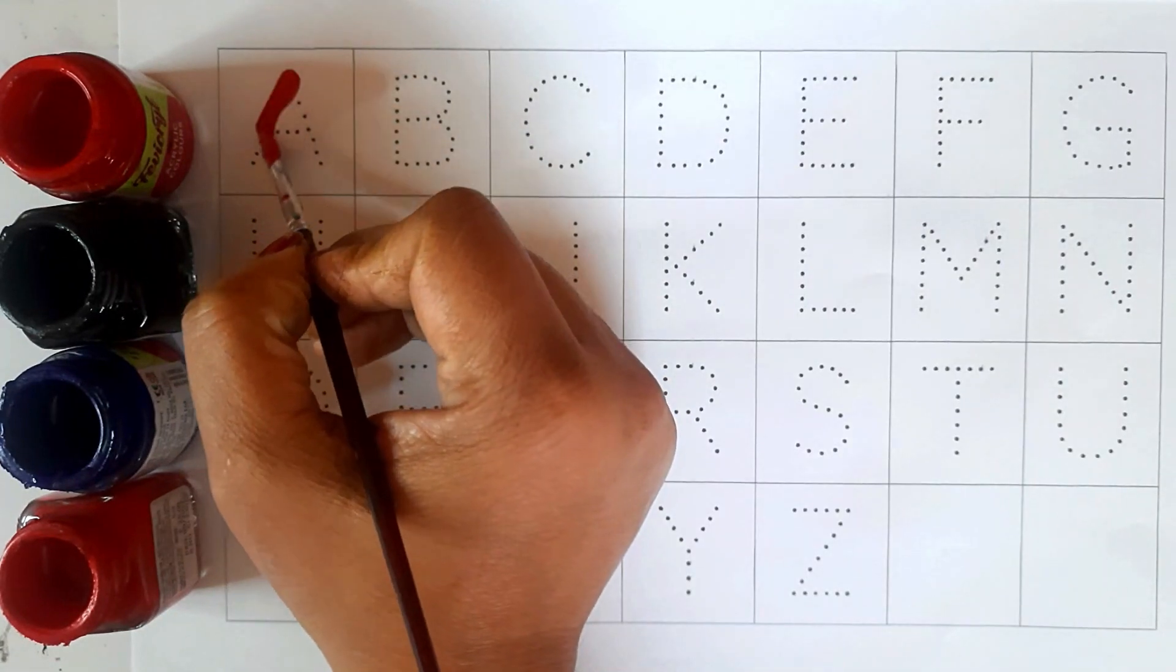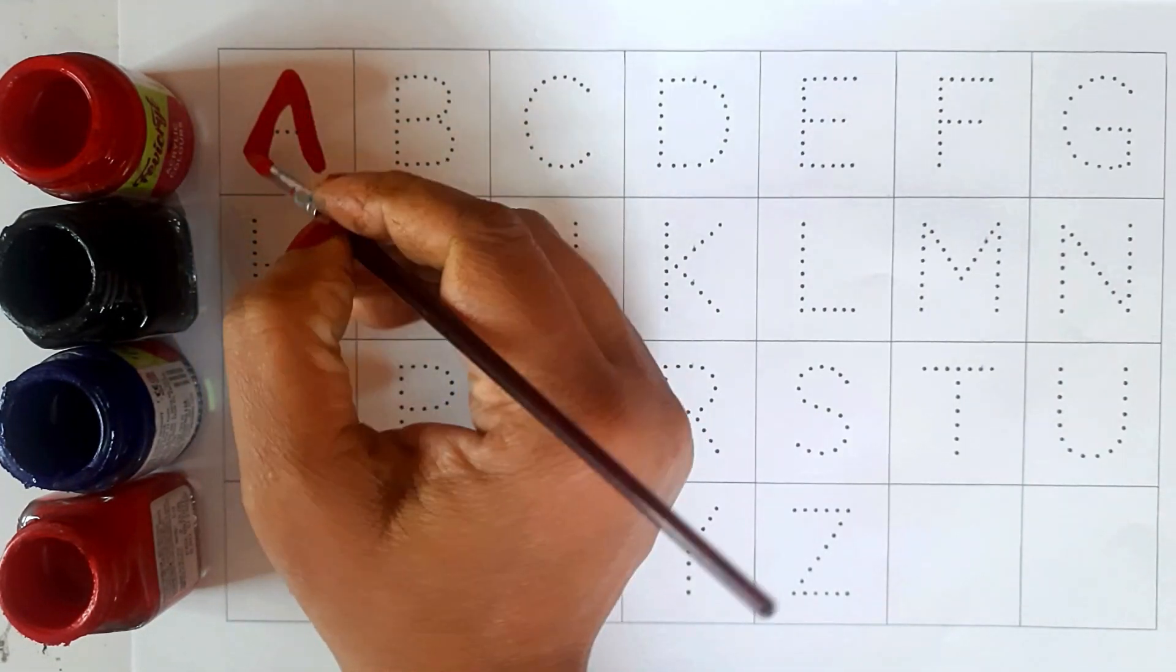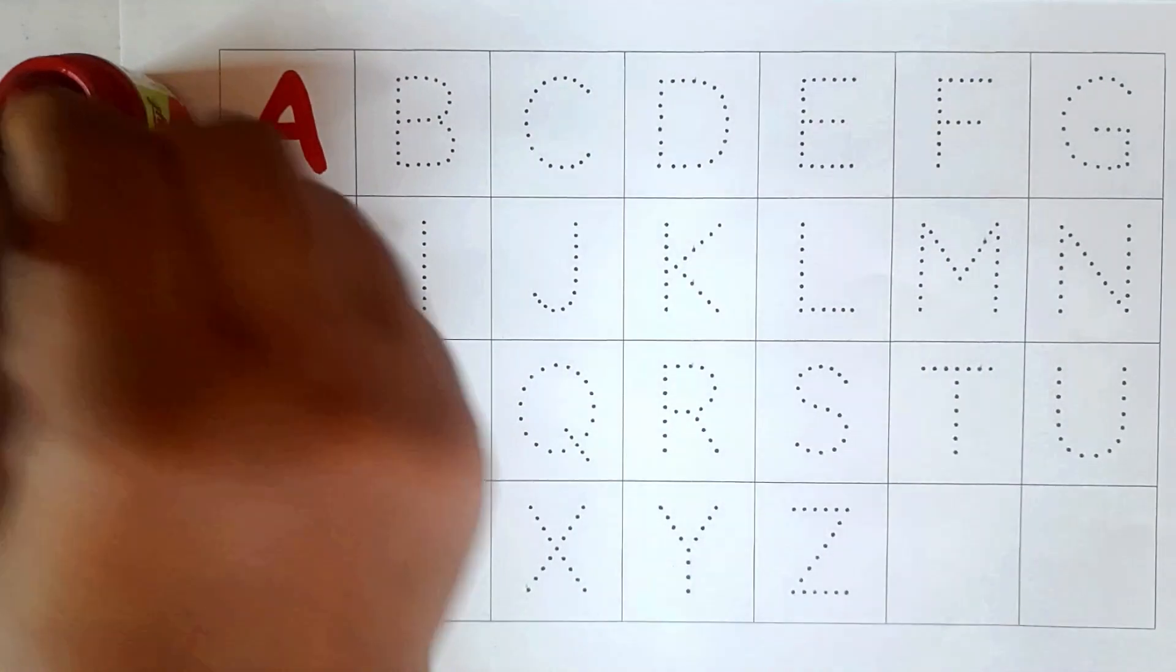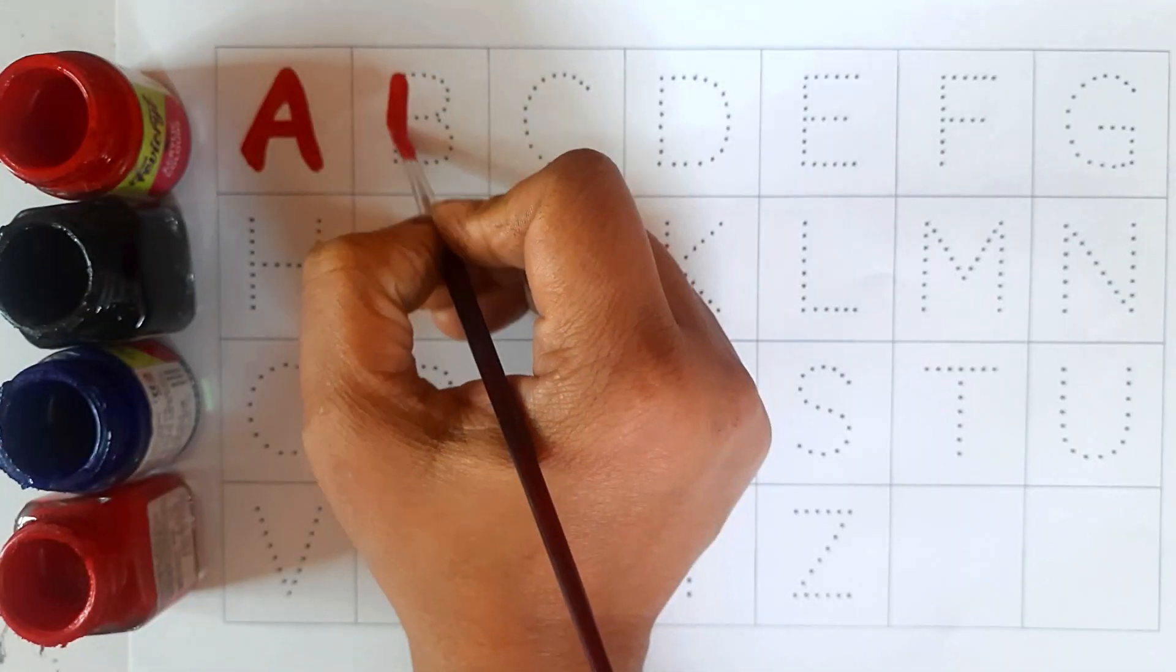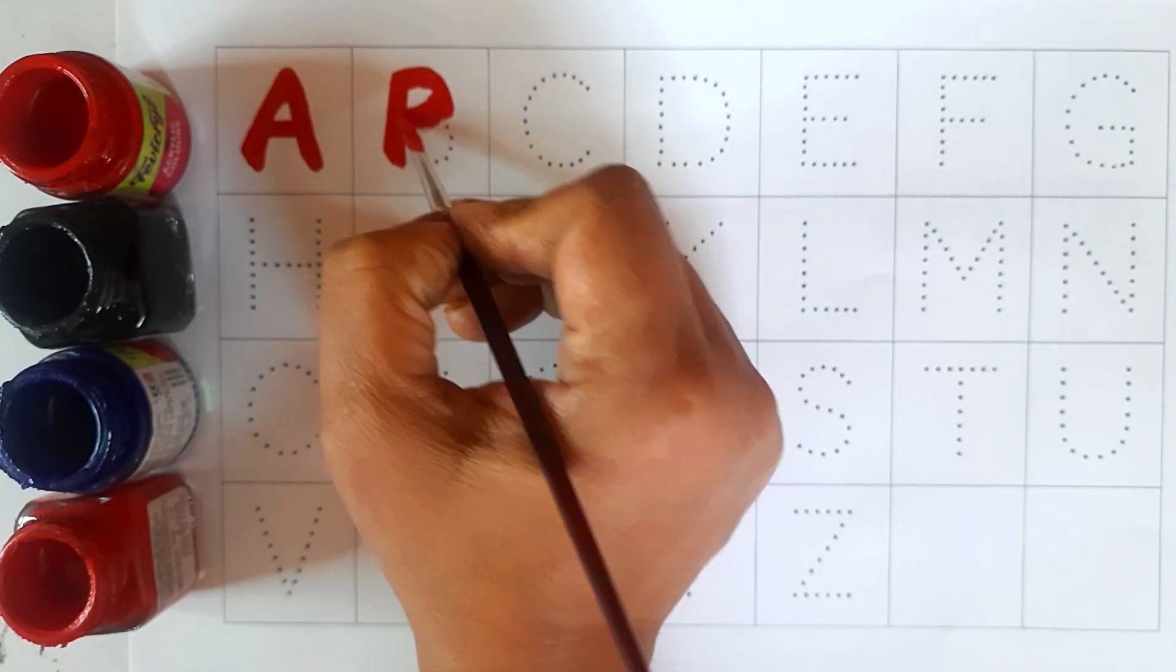Red color. A, A for apple. Red color. B, B for banana.